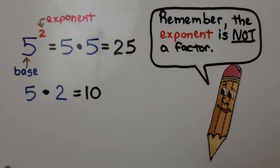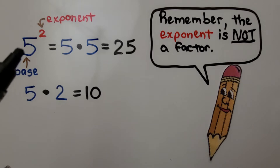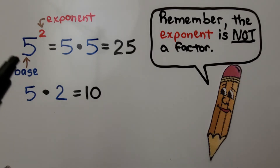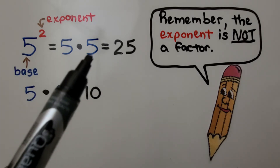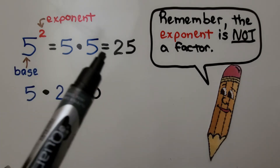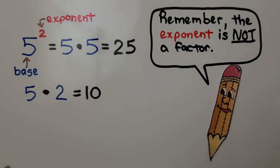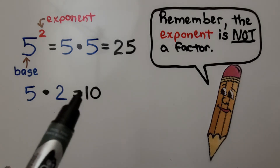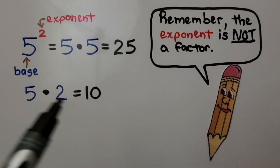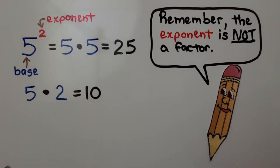Remember, the exponent is not a factor. The exponent tells us how many times to use the base as a factor. If we have 5 as the base raised to the second power as our exponent, that means we're going to use this base 2 times as a factor. 5 times 5 is equal to 25. If we did 5 times 2, that would be 10 — that's not 5 raised to the second power.